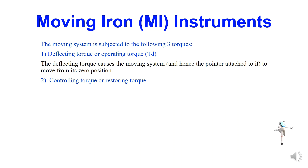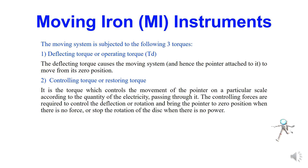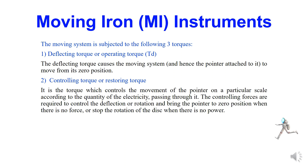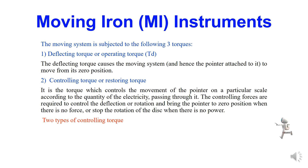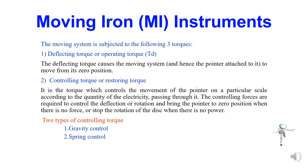The next one is controlling torque. Once the meter is deflected, it has to be controlled. It is a torque which controls the movement of the pointer on a particular scale according to the quantity of electricity passing through it. The controlling forces are required to control the deflection and bring the pointer to zero position when there is no power. It has two types: gravity control and spring control. Based on the meter, either gravity or spring control will be used.